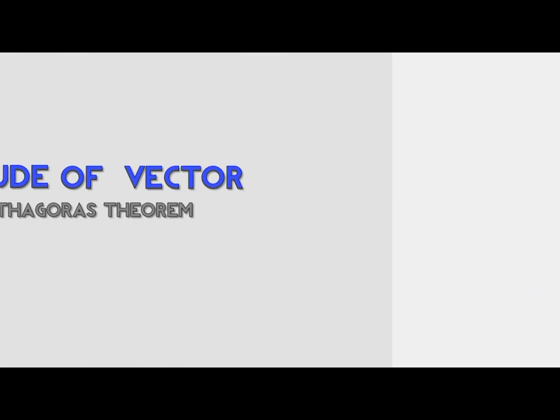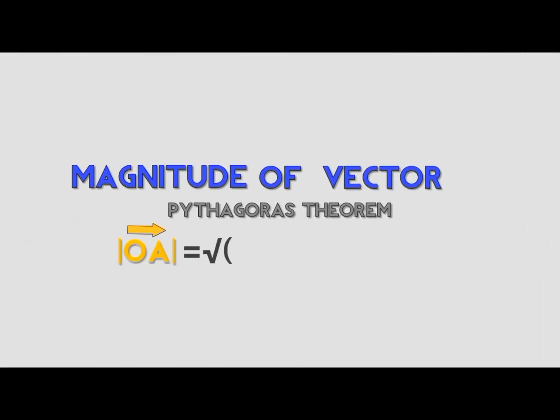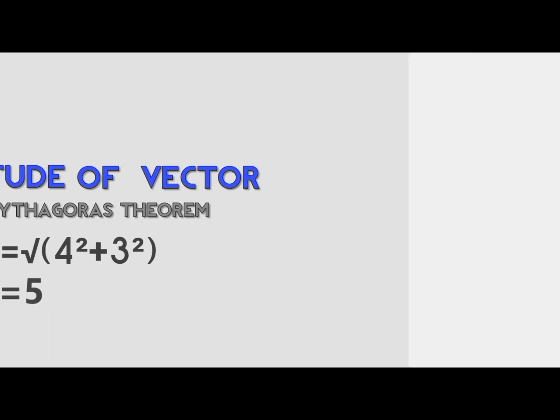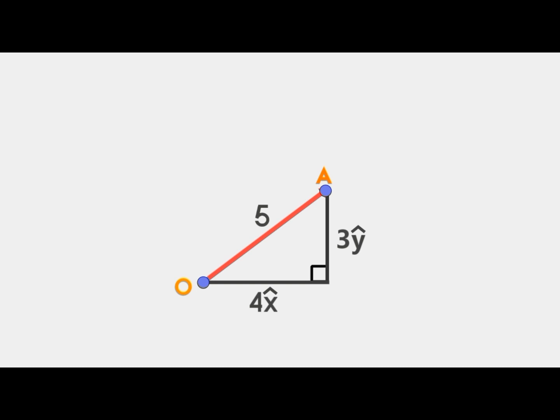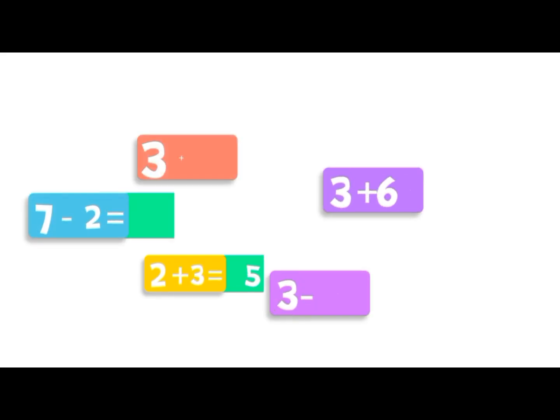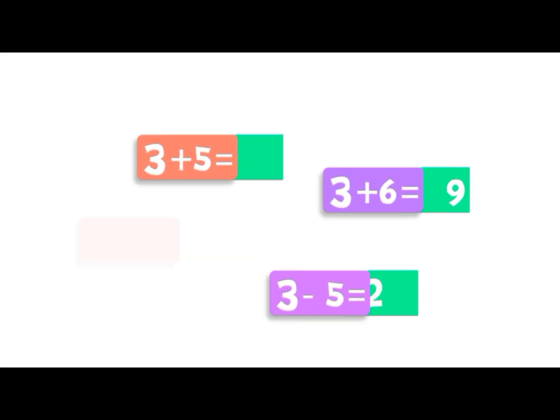Using our coordinate system, the displacement vector can be represented as shown here. The terms 4x-cap and 3y-cap are the components of this vector. Since it forms a right-angle triangle, we can use the Pythagorean theorem to find the length of the vector, which is its magnitude — and in this case it's five.